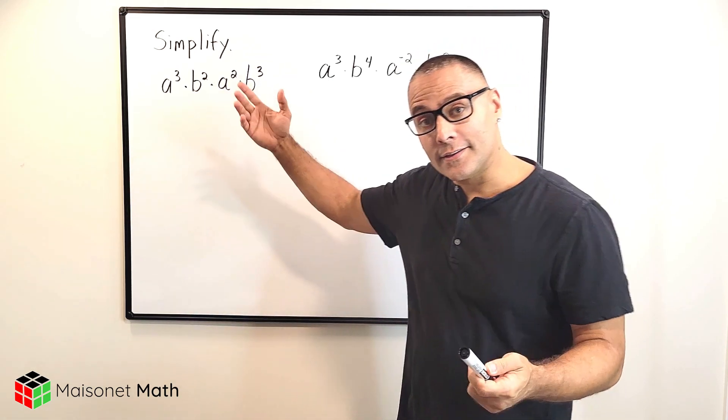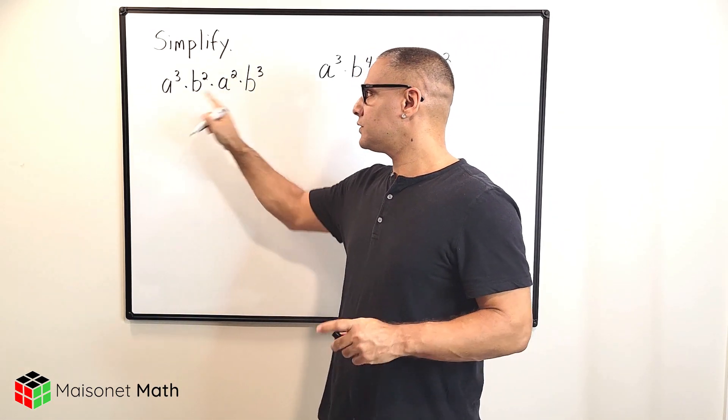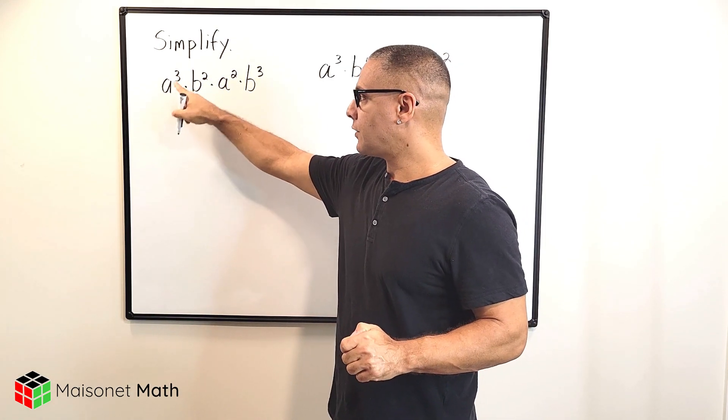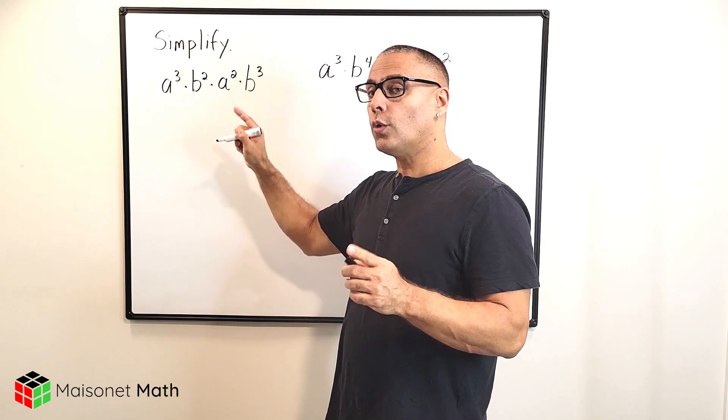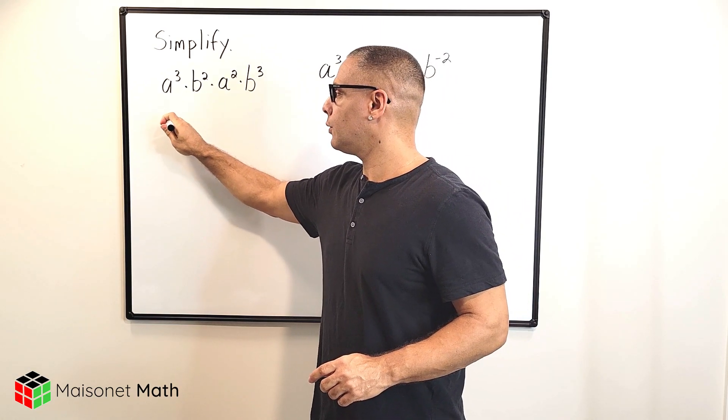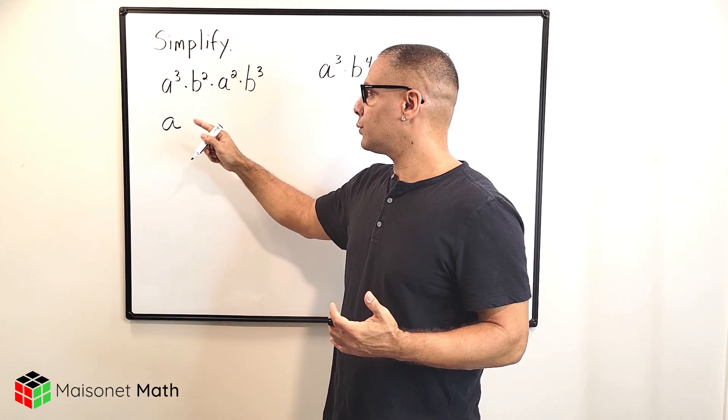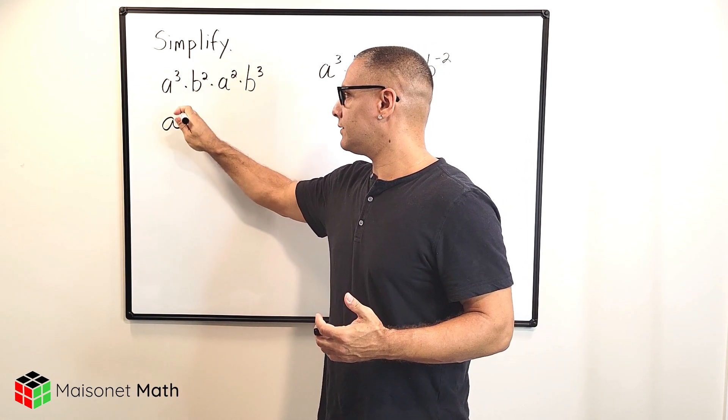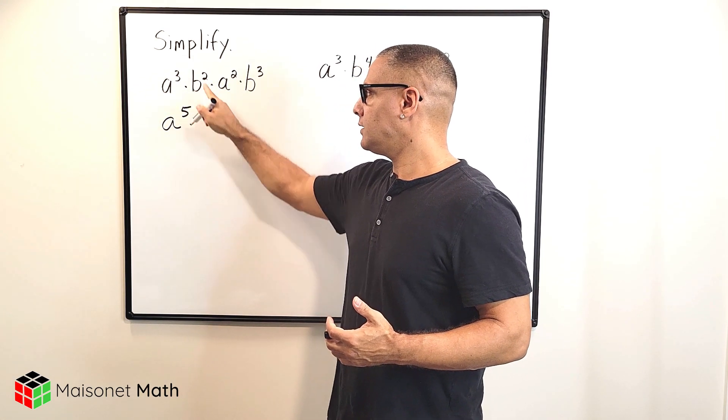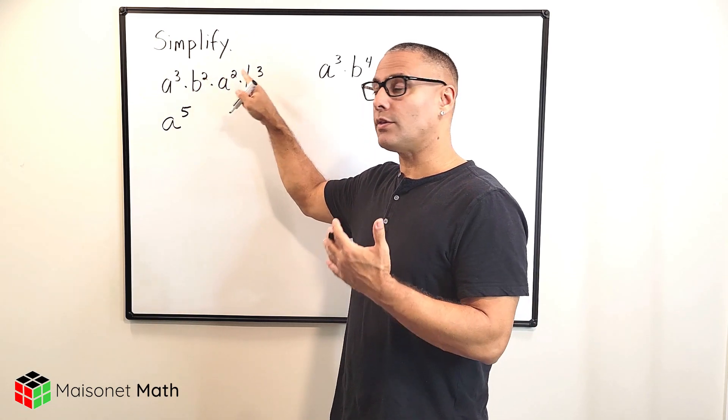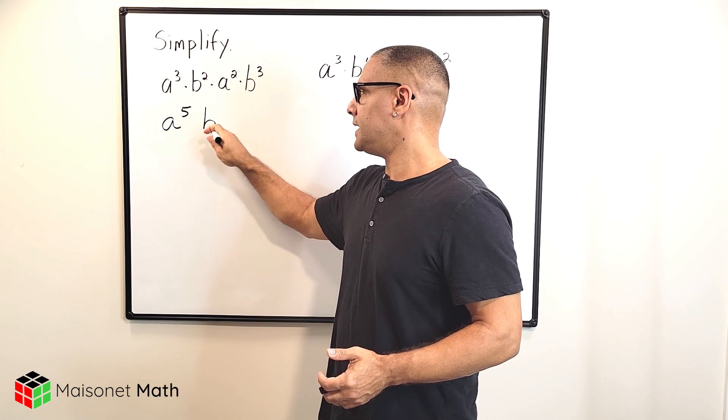So let's take a look at this first example. I'm going to focus on the a's first and look at their exponents. This is a to the third and a to the second, and all we do is write that variable one time and take their exponents and add them together. So we have three plus two, which would give us a to the fifth, and when we multiply the b's together, b to the second times b to the third would be b to the fifth.